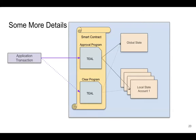A few more details: on Algorand, a smart contract is actually two programs — an approval program and a clear program. We'll see the difference shortly. Both of these programs access the same local state and global state.